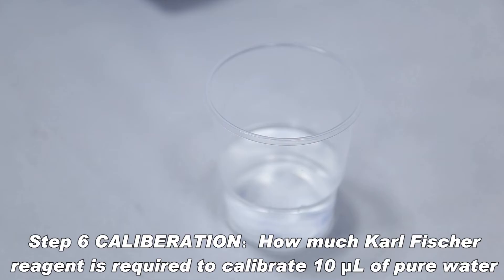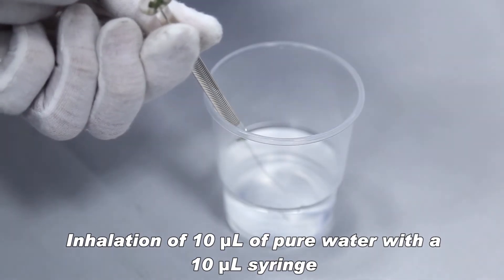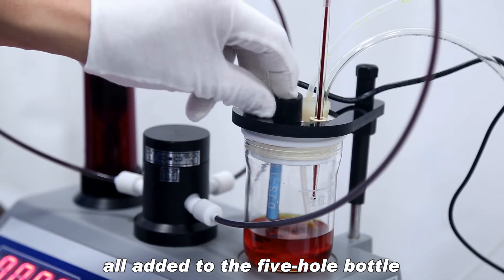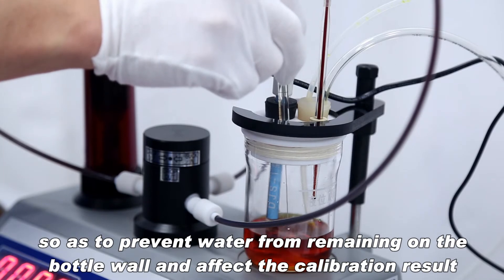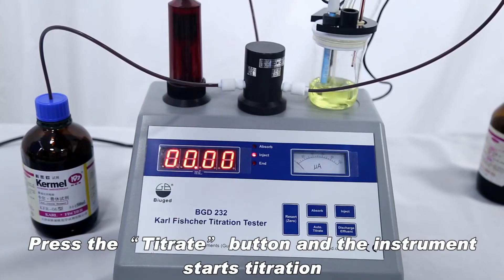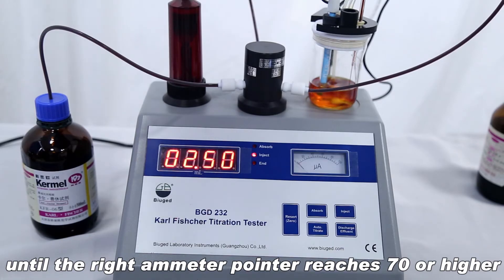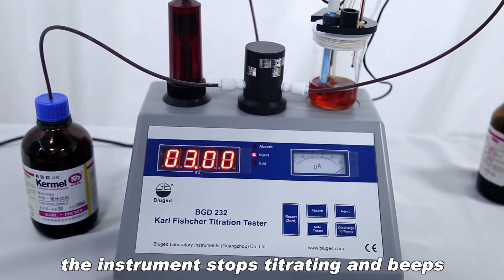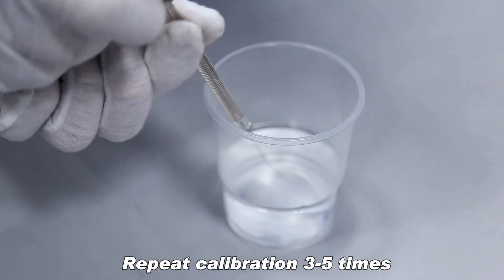Calibration: How much Karl Fischer reagent is required to calibrate 10µL of pure water? Inhalation of 10µL of pure water with a 10µL syringe, all added to the 5-hole bottle. Note not to drip onto the bottle wall when dropping to prevent water from remaining on the bottle wall and affecting the calibration result. Press the titrate button and the instrument starts titration. The display shows the amount of Karl Fischer reagent currently consumed. Until the right ammeter pointer reaches 70 or higher, the instrument stops titrating and beeps. After recording the screen display data, press reset. Repeat calibration 3-5 times.